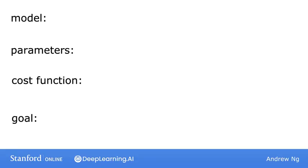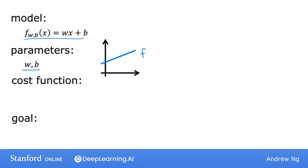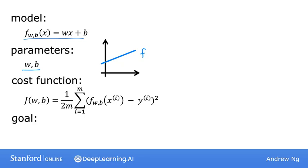To recap, here's what we've seen about the cost function so far. You want to fit a straight line to the training data, so you have this model f_w,b of x equals w times x plus b. The model's parameters are w and b. Depending on the values chosen for these parameters, you get different straight lines, and you want to find values for w and b so that the straight line fits the training data well. To measure how well a choice of w and b fits the training data, you have a cost function J, which measures the difference between the model's predictions and the actual true values for y. Linear regression tries to find values for w and b that make J of w, b as small as possible — we want to minimize J as a function of w and b.